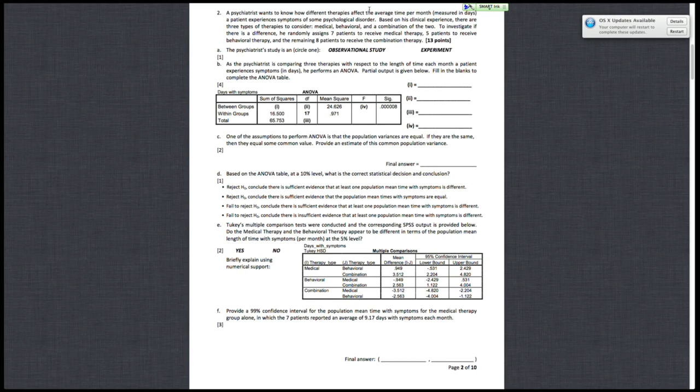We're going to continue with video solutions for the fall 2011 final exam. This is question two, and a psychiatrist is doing studies to affect the effect of different therapies on the average time per month a patient has symptoms of a psychological disorder. There are three treatments that are considered, or therapies rather: medical, behavioral, and combining the two of them. The researcher wants to examine whether there's a difference between these three groups and the time that the patient experiences symptoms of the disorder.